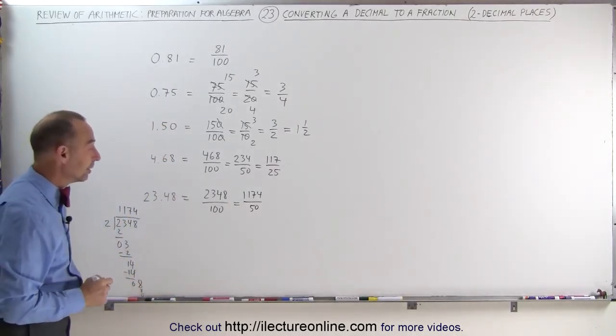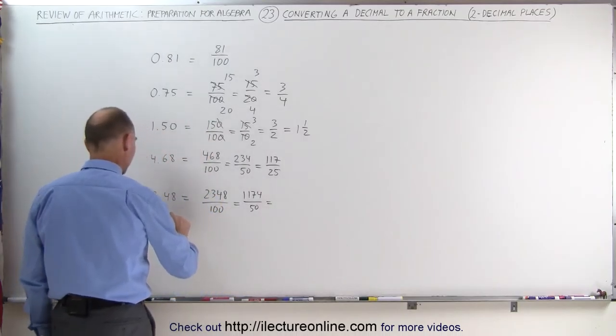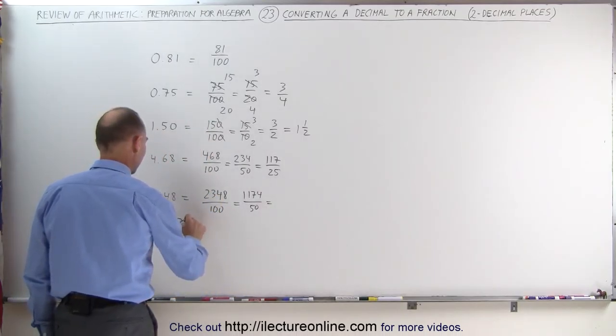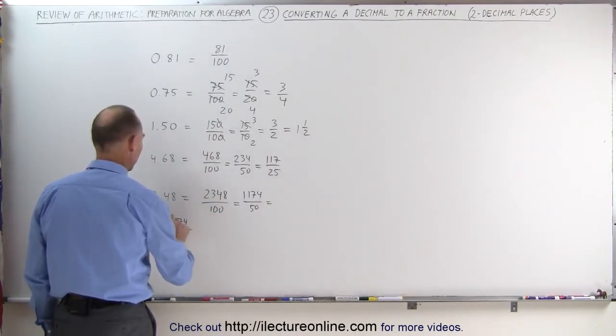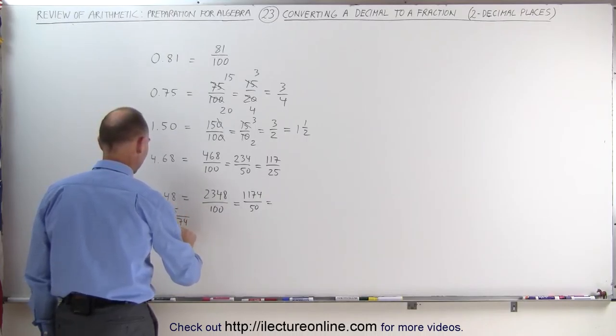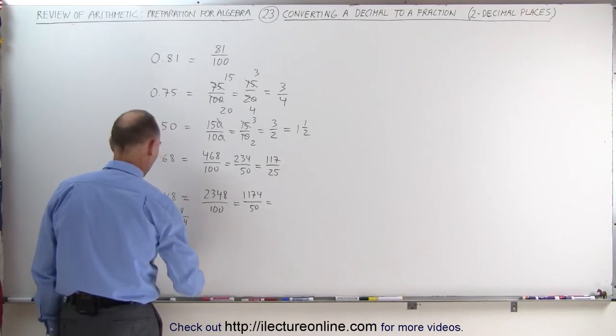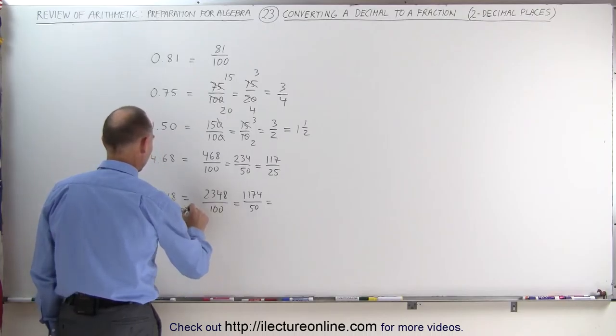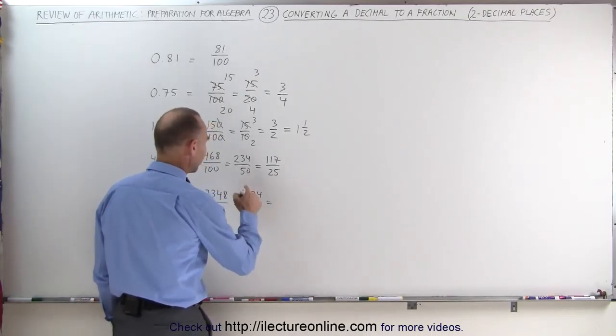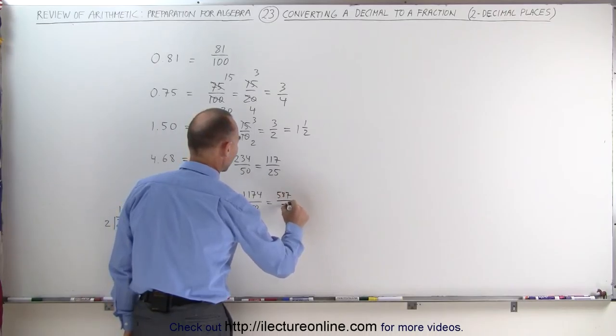Again, they're both divisible by 2. Now we can write this as, well, okay, again we go 1174 divided by 2. 2 goes into 11 five times. 5 times 2 is 10. 2 goes into 17 eight times. 8 times 2 is 16. I get 1. 2 goes into 14 seven times, which means if I divide the numerator by 2, I get 587 divided by 25.